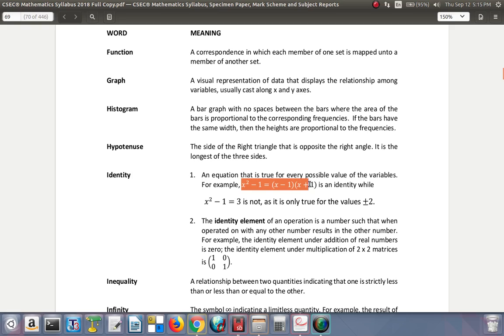With this one up here, no matter which number you are putting, it is an identity, so it will give you the same answer over here and over here. The identity element of an operation is a number such that when operated on with any other number results in the other number. For example, the identity element on the addition of real numbers is 0. That means you add 0 to any number, the answer is that same number.